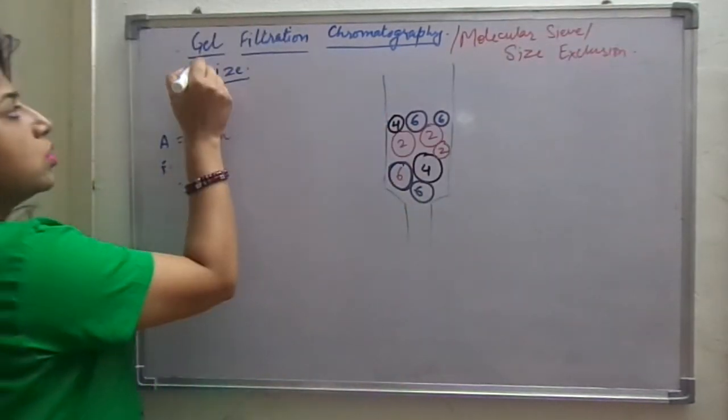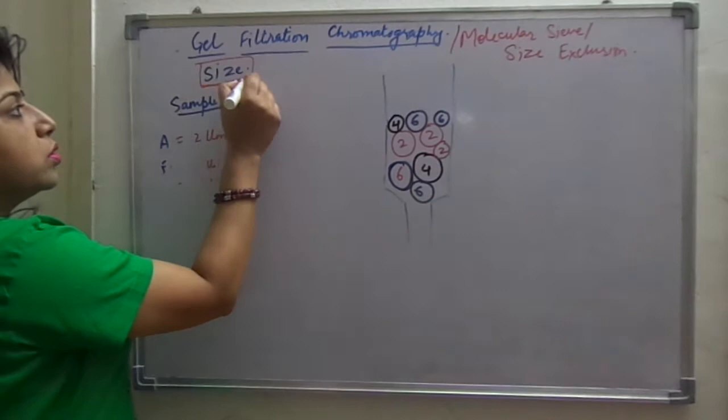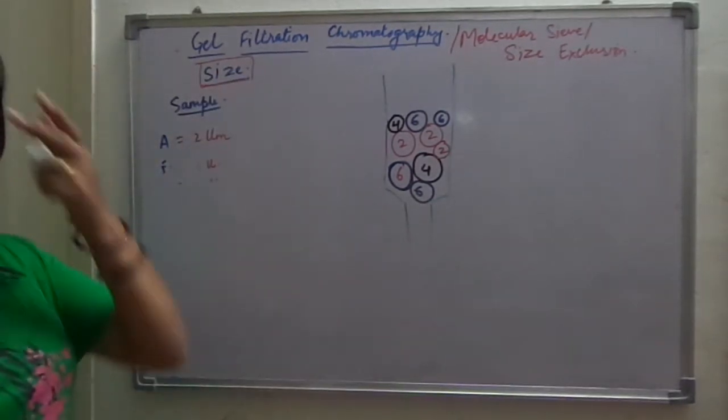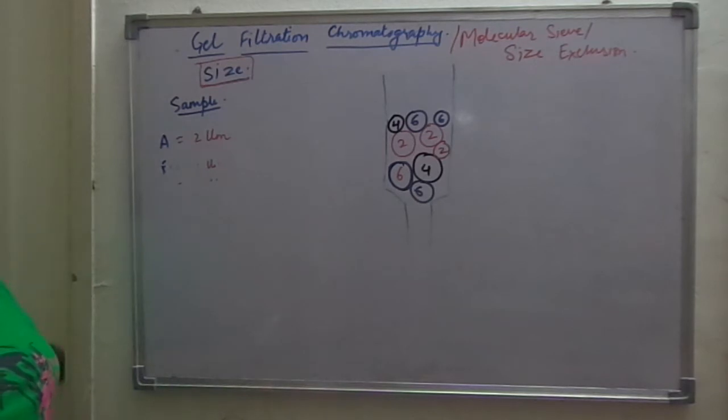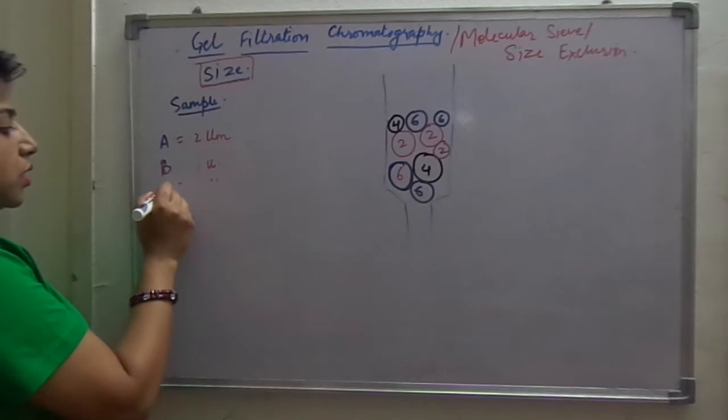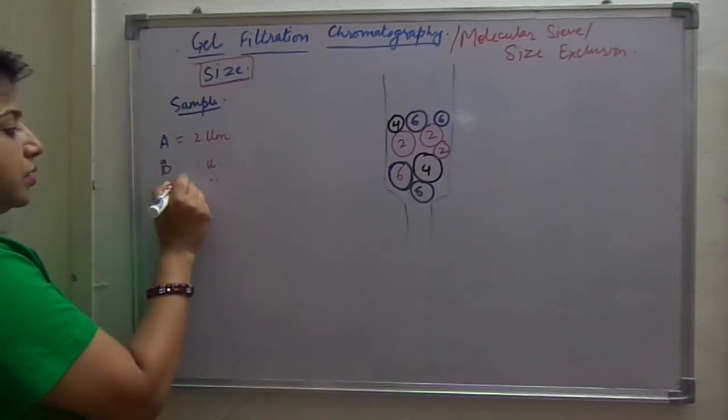It separates the molecules always on the basis of size. Now, we can understand the technique by using an example. Suppose we are having a sample which is having 4 components A, B, C and D.